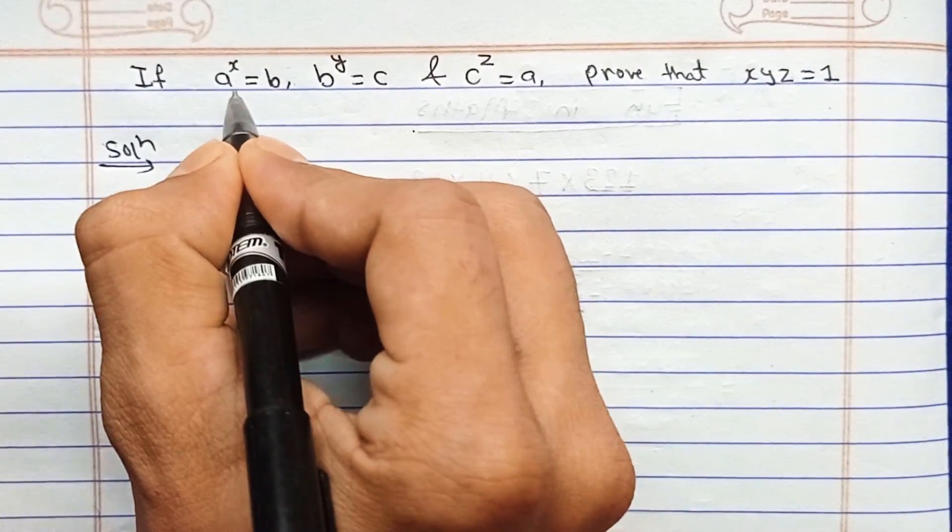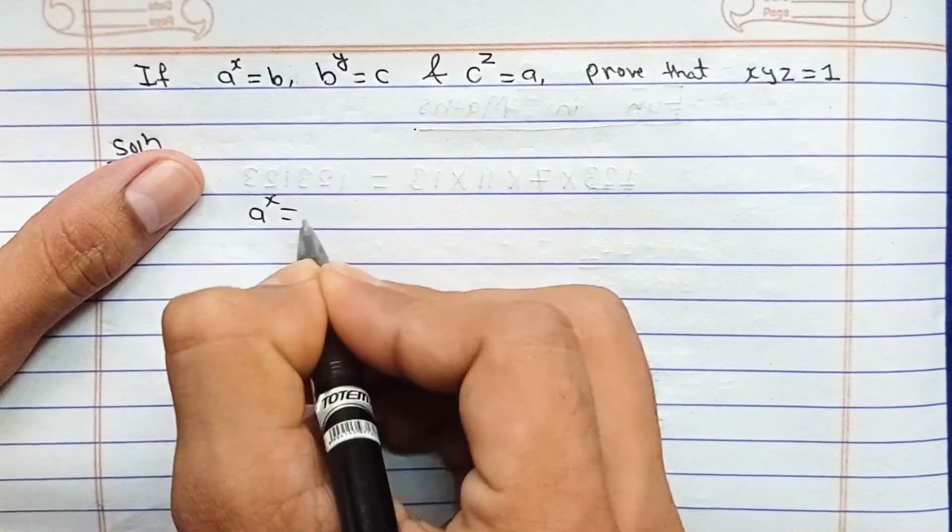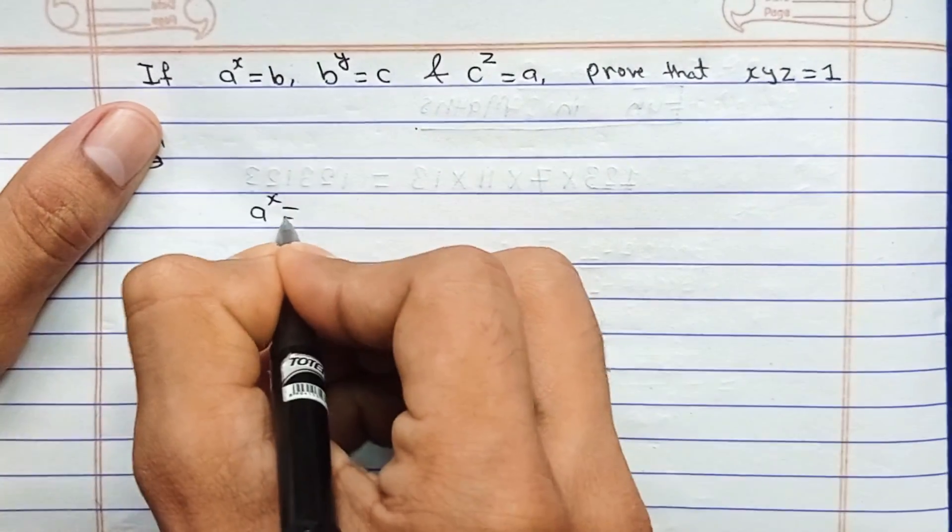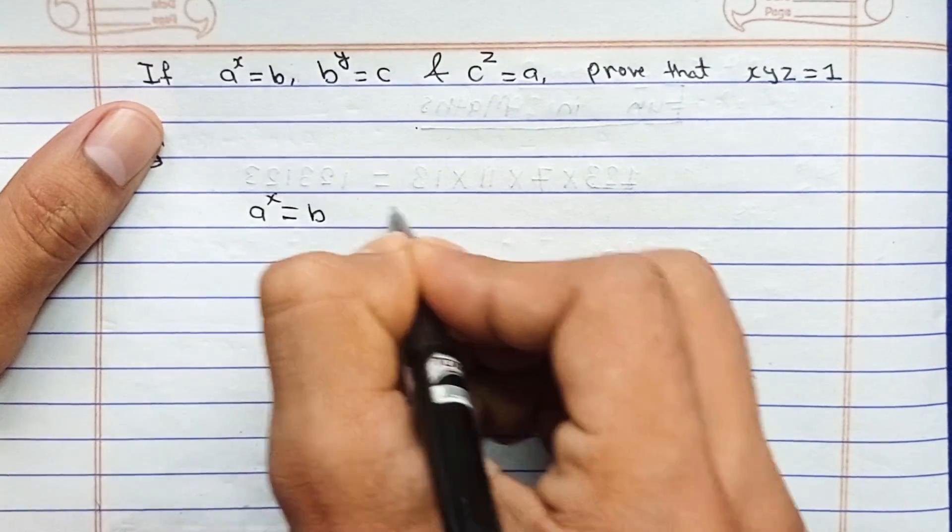Just write the given condition a to the power x equals to b. Just start from any of the given conditions: a to the power x equals to b, this is given.